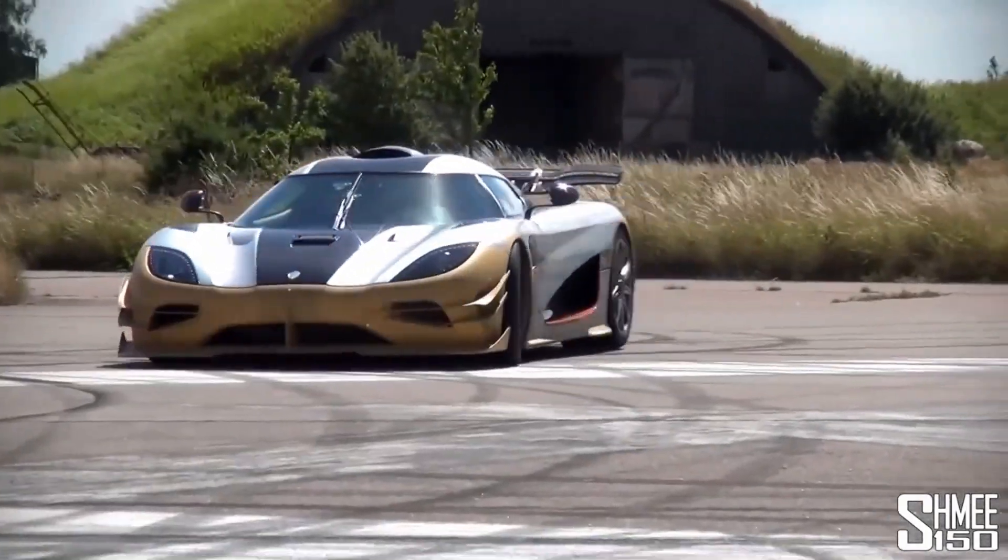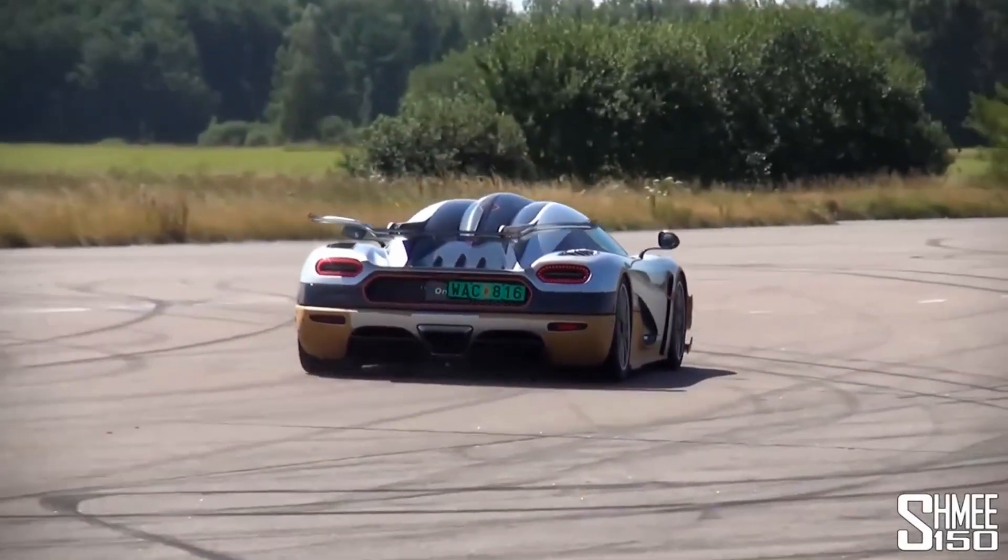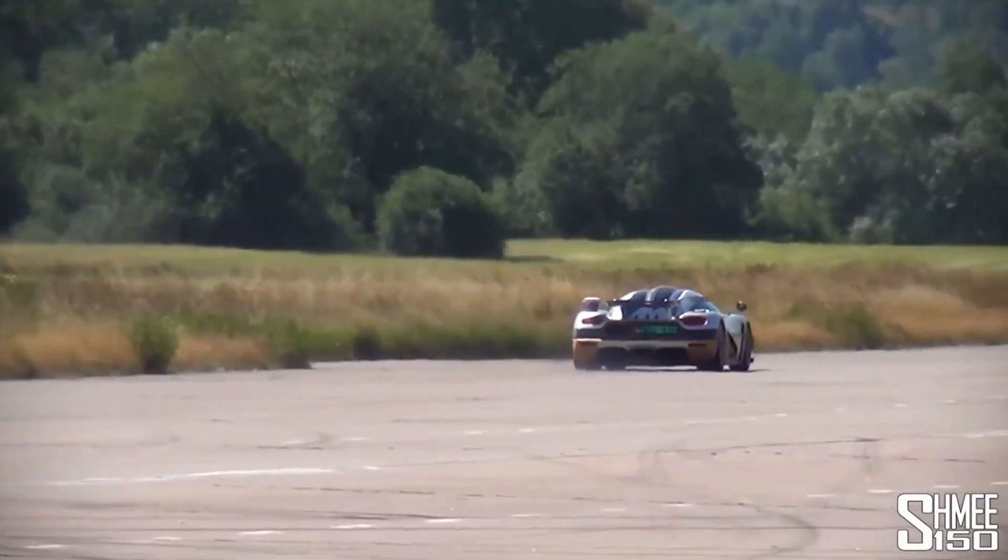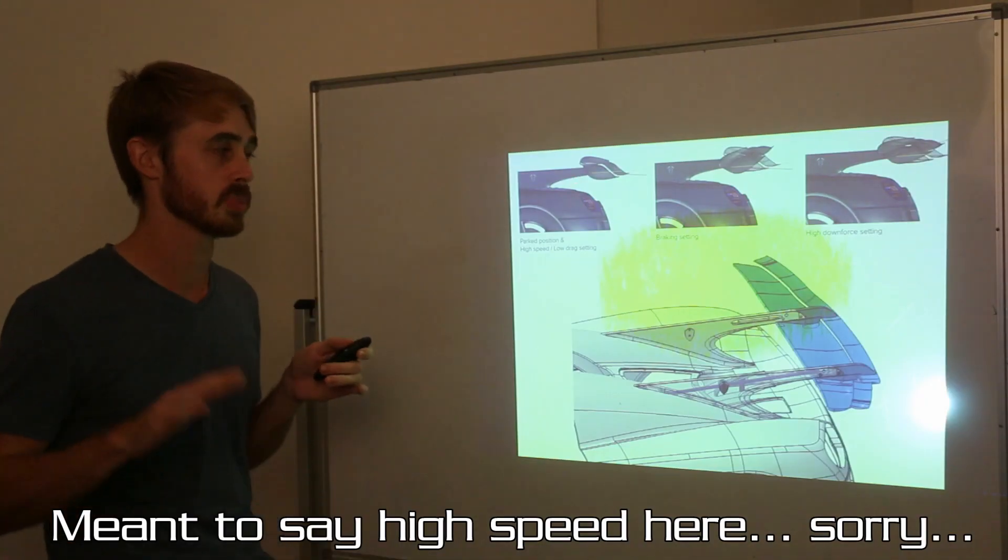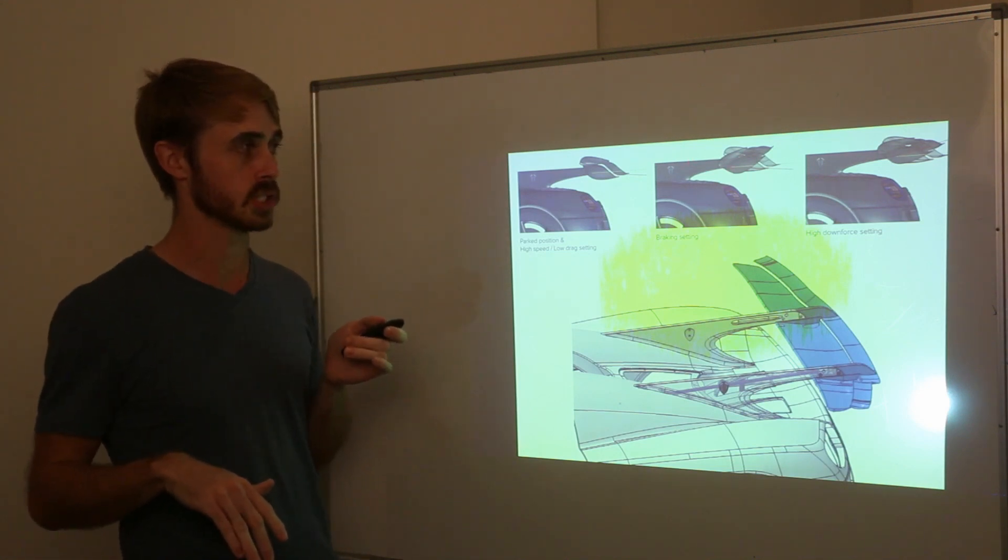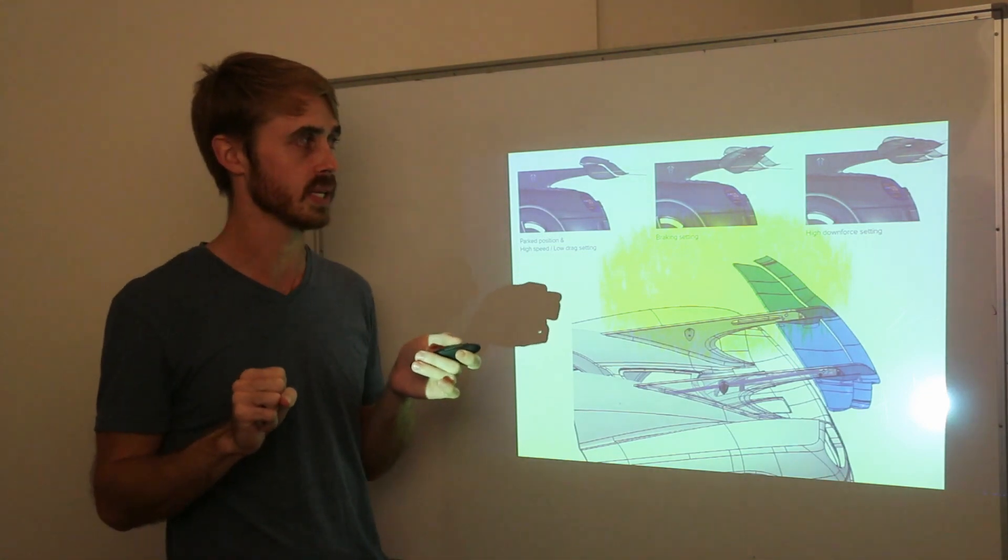The Koenigsegg system is infinitely adjustable but they say they've got the low speed and parking position which is low angle of attack to reduce drag, the braking setting which is really high angle of attack and the high downforce setting which is an intermediate angle of attack.